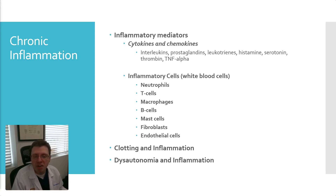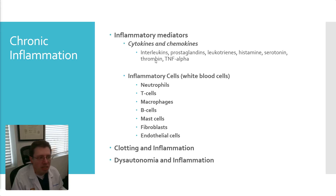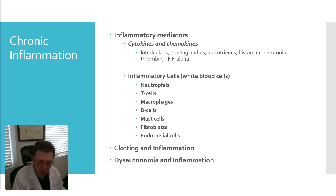And because there are so many cells involved — for instance, there are many different T cells that have different functions — it's a very complicated system. Clotting is absolutely involved with inflammation. When clotting starts, it promotes inflammation, and the point of inflammation is to correct and heal. It's when it becomes chronic that it becomes a problem. Dysautonomia is linked to inflammation. Sympathetic overdrive, or high sympathetic tone, is linked to inflammation. All of these systems work together, and that's part of what the problem is with long COVID.